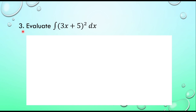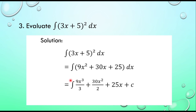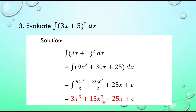Number three: evaluate the integral of the quantity 3x plus 5 squared dx. We write the given equation, then expand the square of the quantity 3x plus 5 to get the integral of 9x squared plus 30x plus 25 dx. Adding 1 to each exponent and dividing, we have 9x cubed over 3 plus 30x squared over 2 plus 25x. Simplifying the coefficients and adding the constant of integration, the final result is 3x cubed plus 15x squared plus 25x plus C.